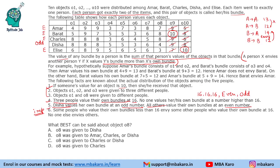Now let us first start with the two people for whom we know the values. Bharat has O9 and should get another even number to total to an even. Adding two odd numbers gives even; odd plus even gives odd; even plus even gives even. If Bharat gets O8 his bundle will be 18 which is not possible. So Bharat will get object O7 giving a total of 16. So Bharat is done — O7 and O9 go to Bharat.